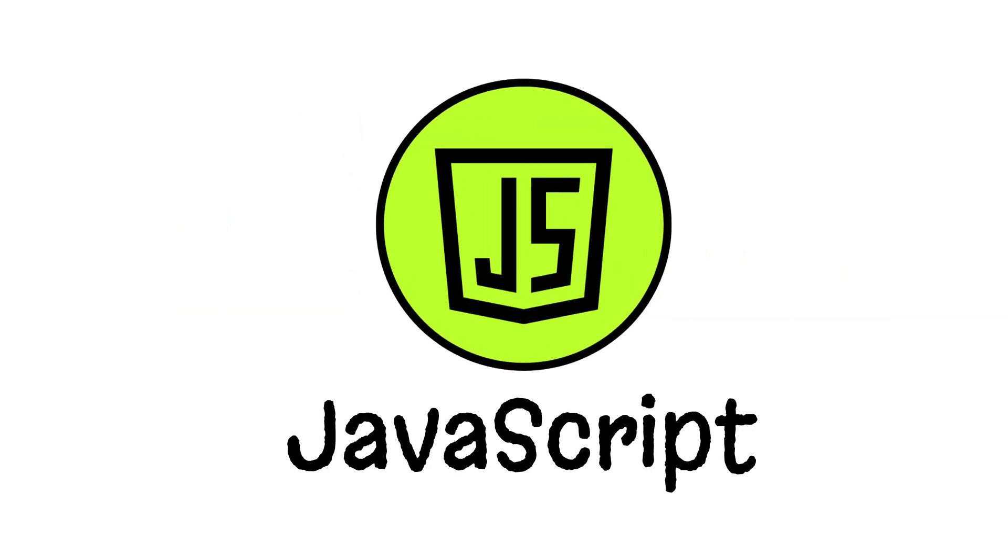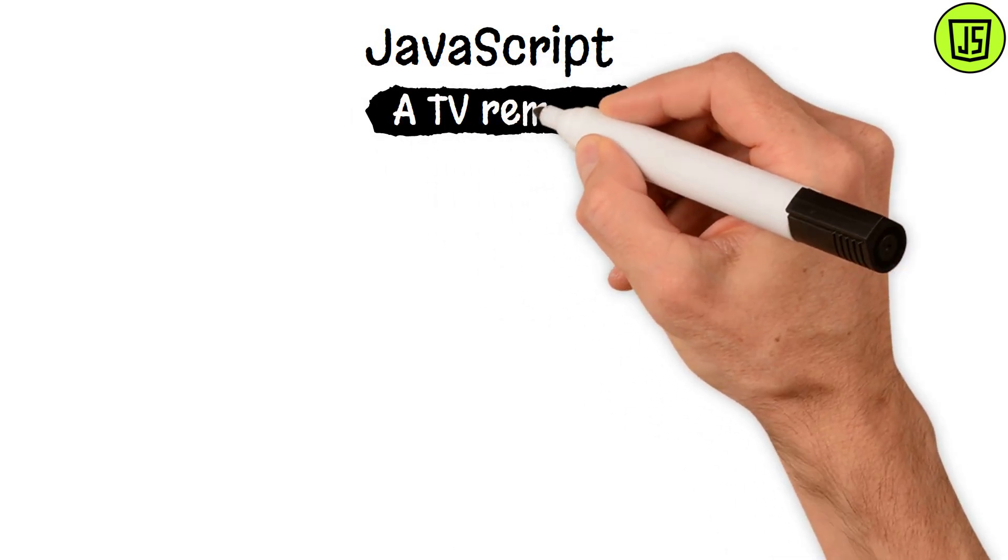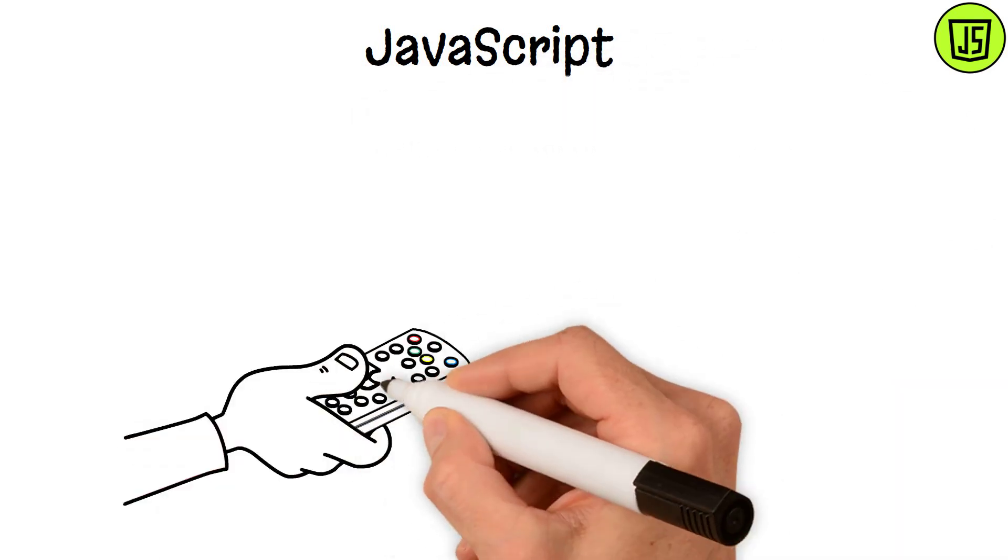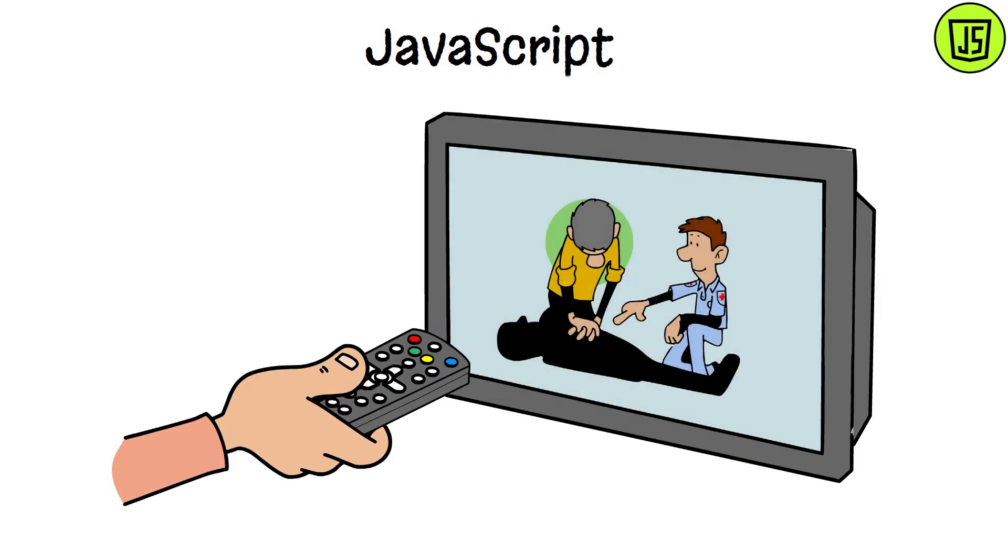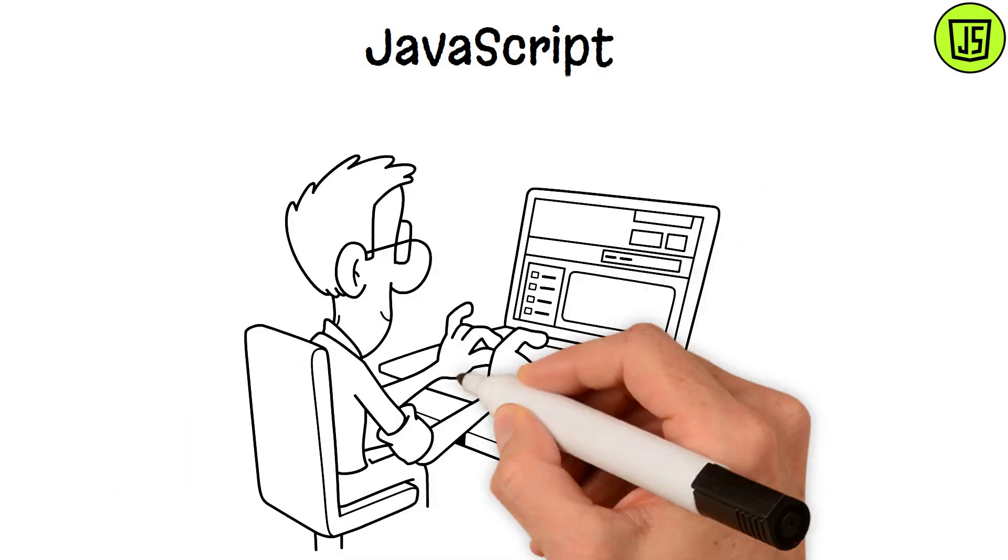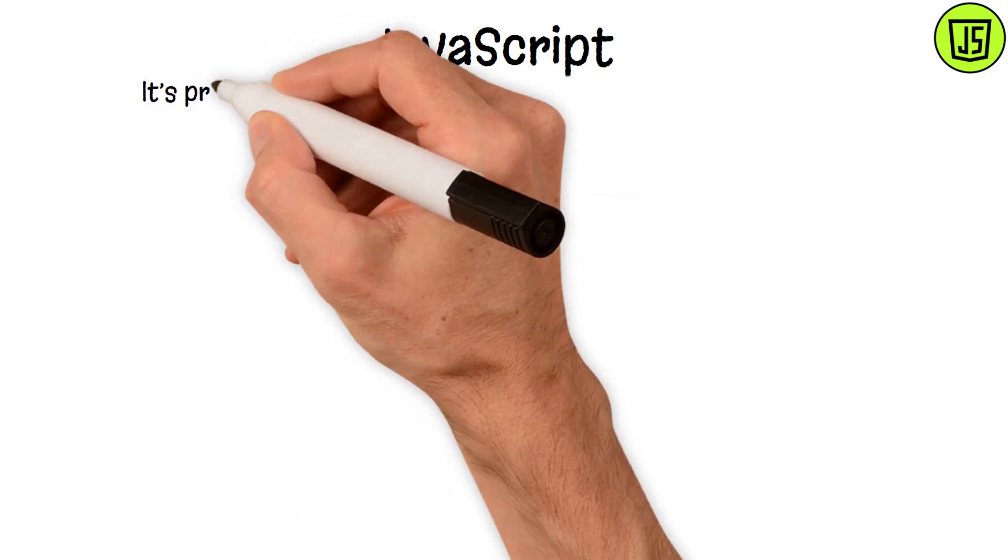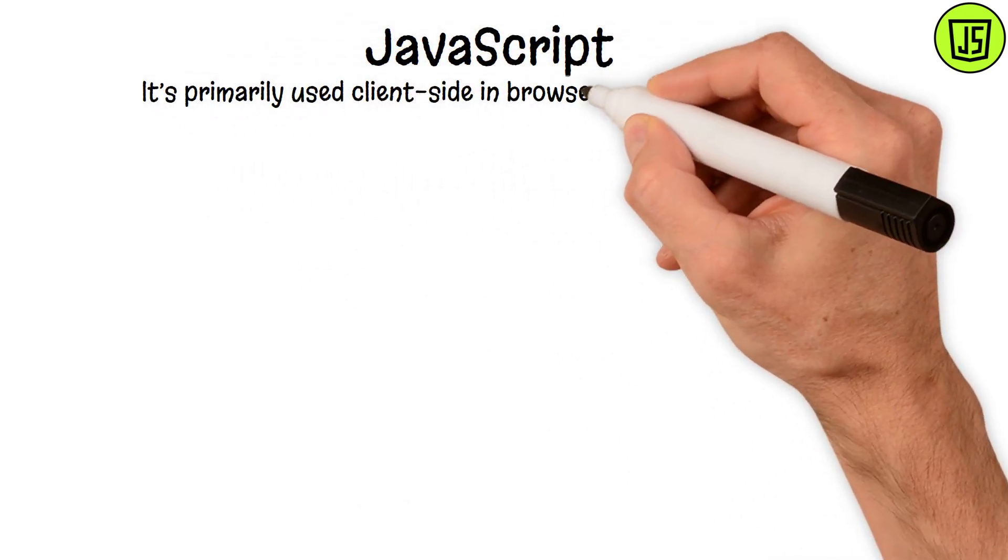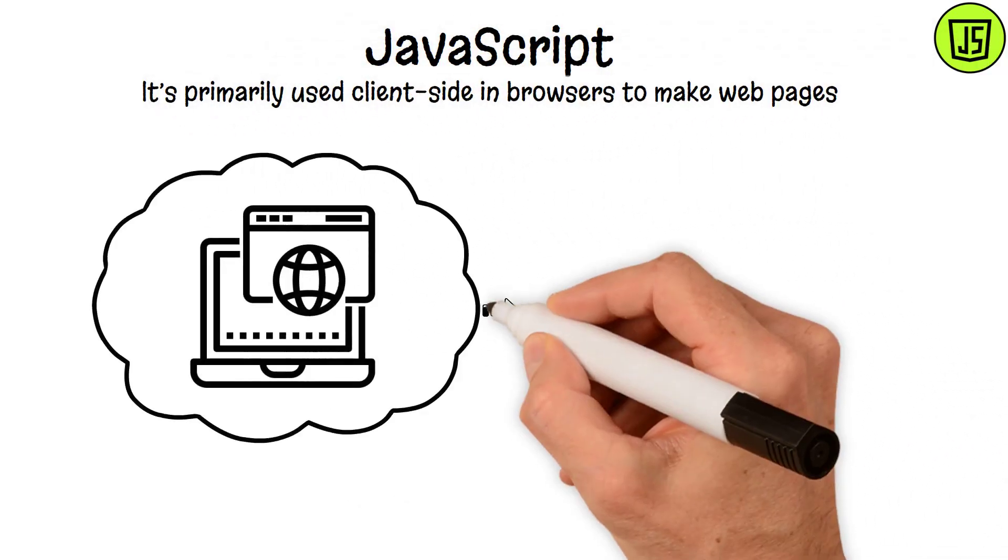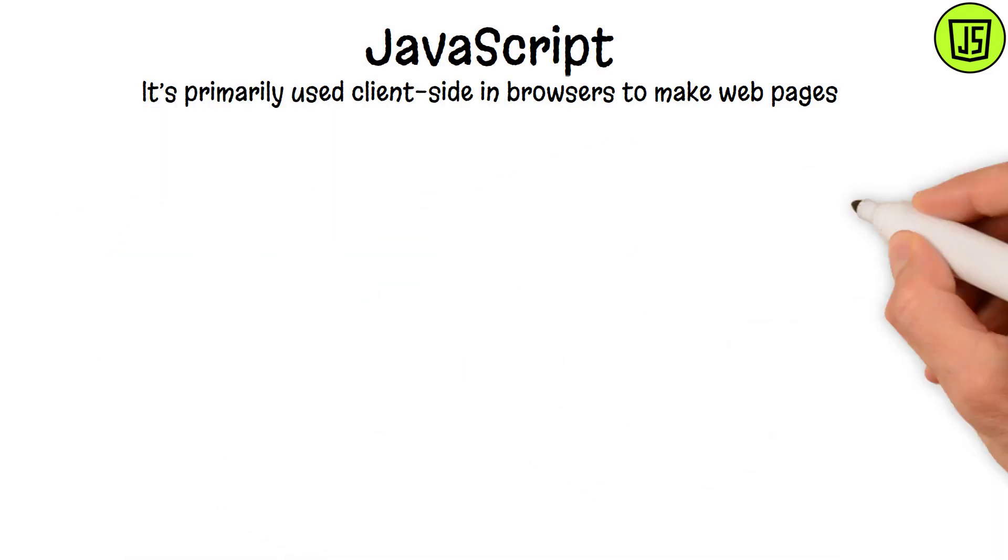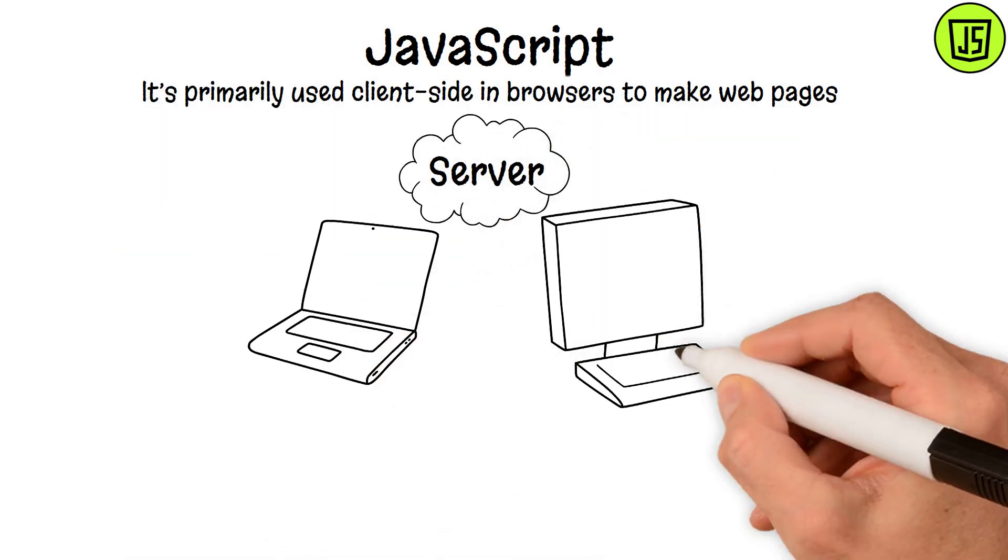JavaScript. JavaScript is like a TV remote for websites. Just like how a remote lets you flip through channels without getting up, JavaScript lets you interact with web pages without refreshing them. It's primarily used client-side in browsers to make web pages dynamic and responsive in real-time, but it also powers server-side operations.